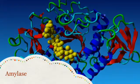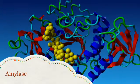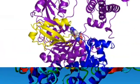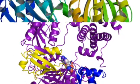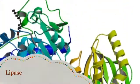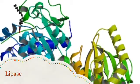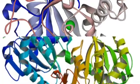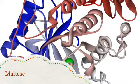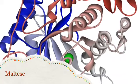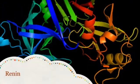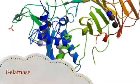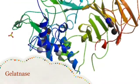Amylase is an enzyme that acts on starches. Protease is an enzyme that acts on proteins. Lipase is an enzyme that acts on fats. Maltase, sucrase, and lactase act on sugar. Renin acts on proteins in milk, and gelatinase acts on gelatin and collagen.